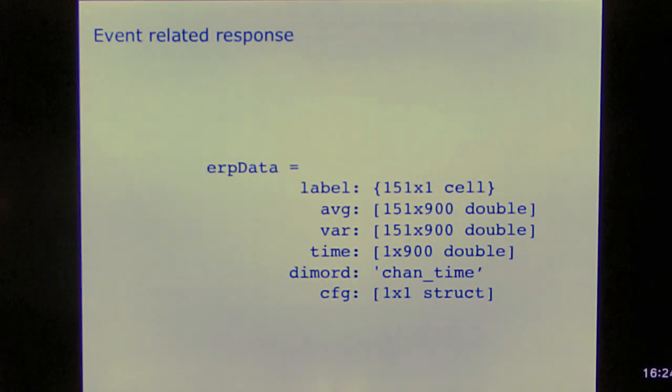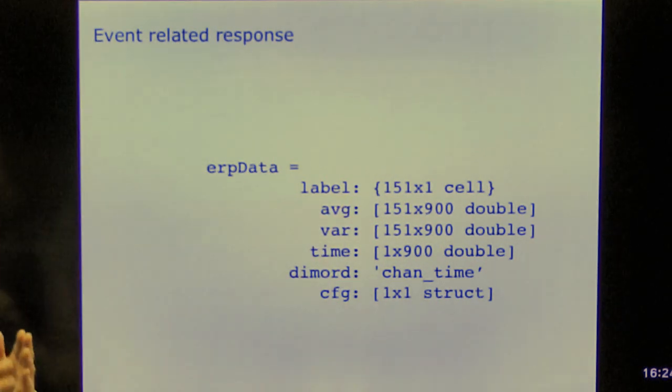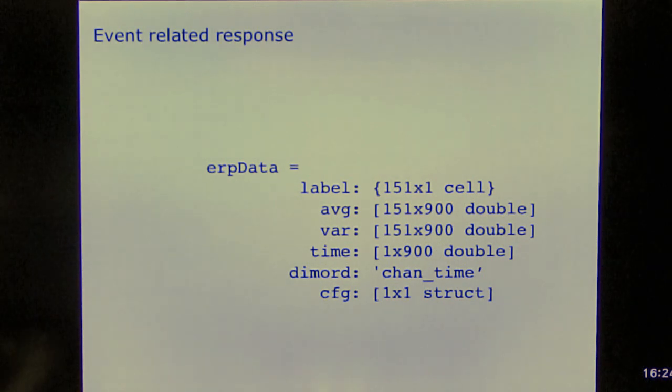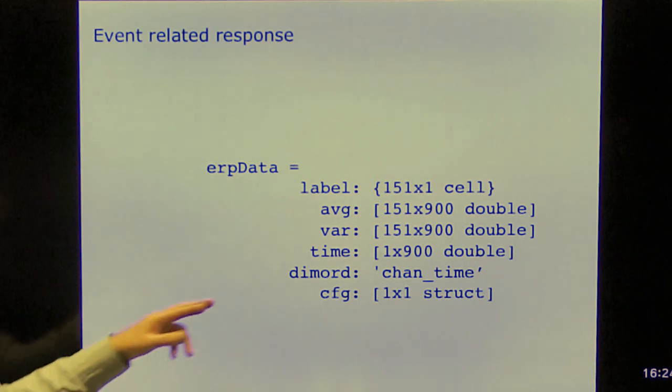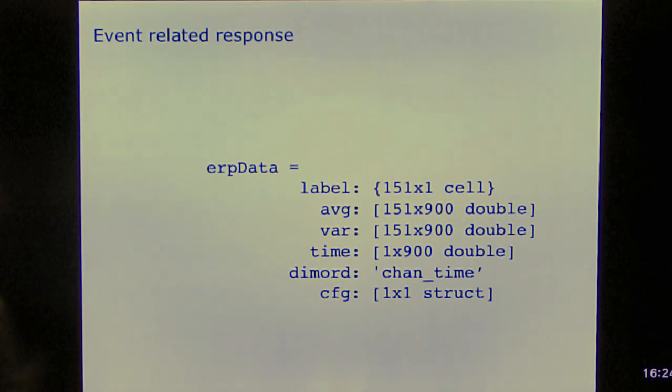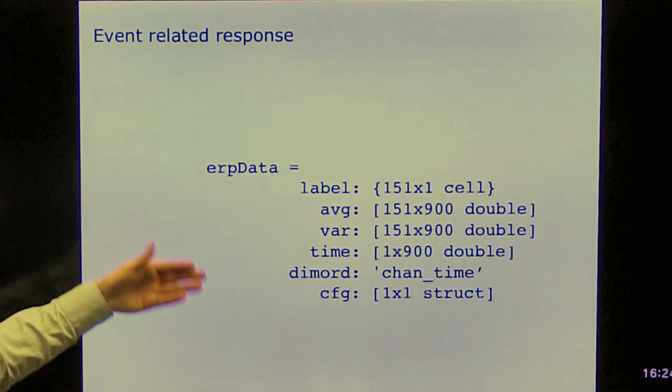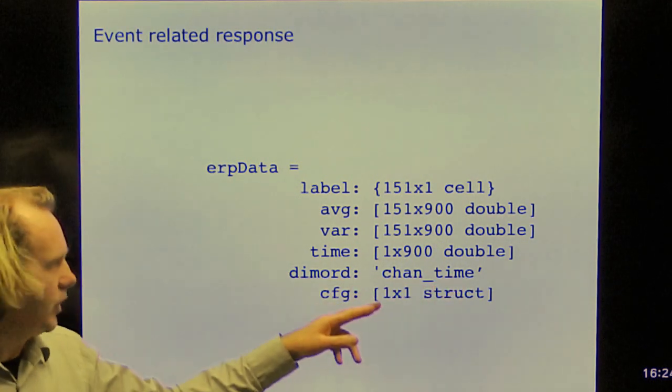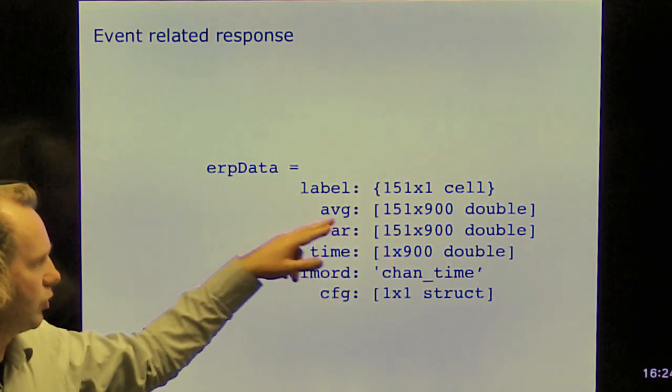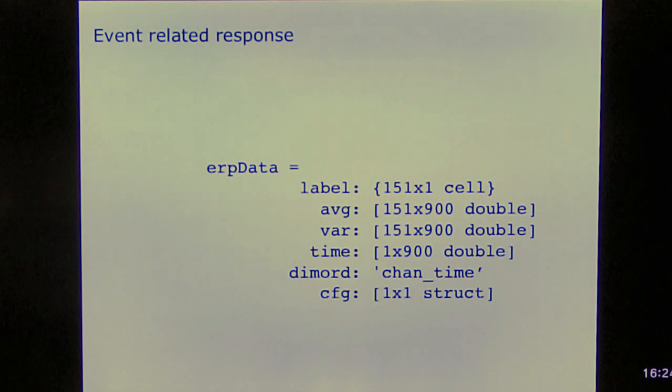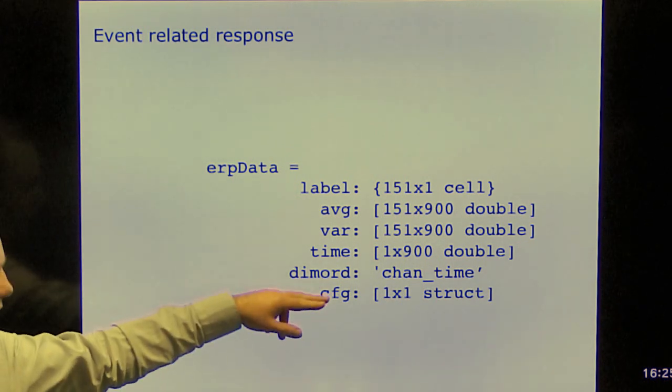This is an example of an event-related field. So what you see is that there's an average, which is 151 by 900. So that's a matrix, and you can directly plot it in MATLAB without using any other functionality. What you also see is that there's labels, 151 strings, and there's a time axis, 900. Also important is this dimord. So the more complex FieldTrip data structures all have a dimord, and the dimord specifies how you can interpret the data. So here the data is still relatively straightforward with channels by time. And if I look at the dimord, I know it's channels by time. Channels, what is 151, time is 900. So anything that is 151 by 900, which also includes the variance, can be interpreted as channels by time. If you go to frequency analysis, and if you keep trials, then you can have up to four-dimensional structures. If you go to source space, you can have up to five-dimensional structures. Three dimensions for space, and then time and frequency. So that's why it's important to keep track of all these dimensions. And again, it has this configuration structure.